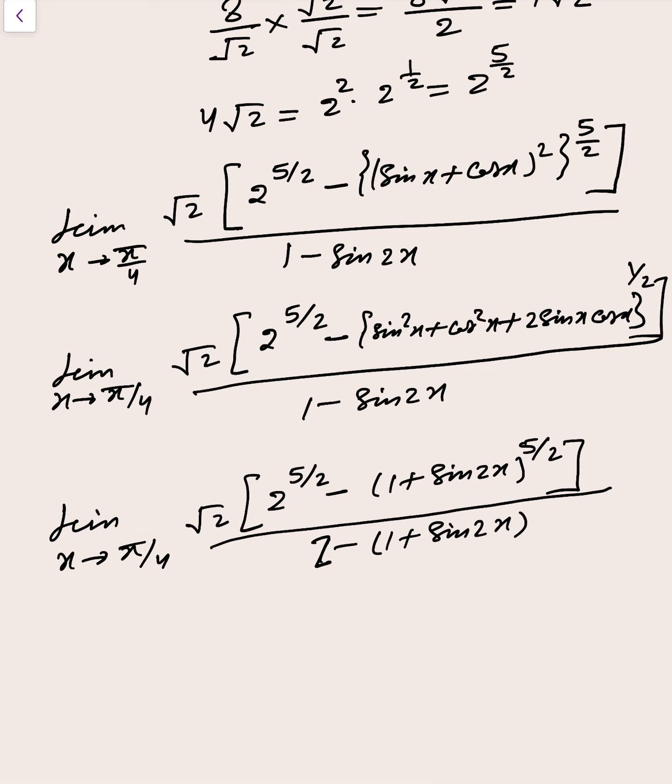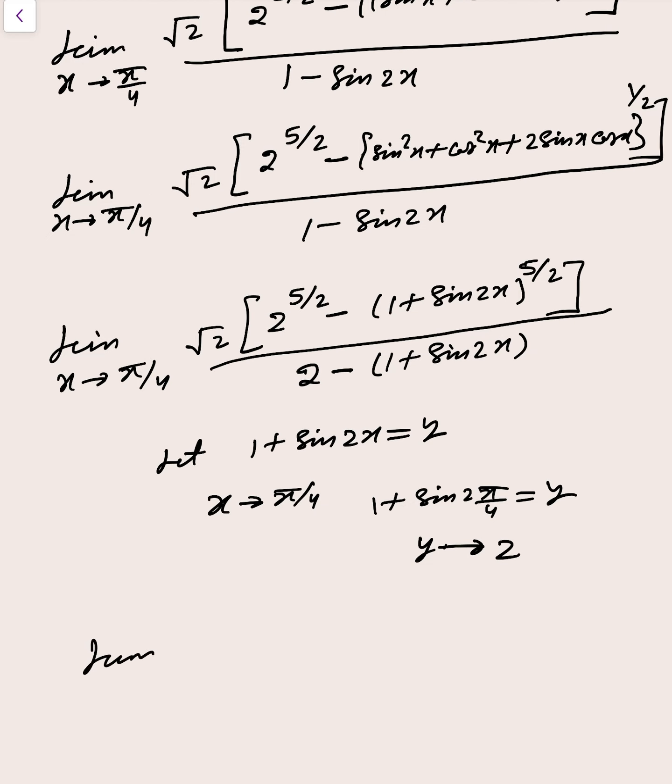Now if you see very carefully, let 1 plus sin 2x equal to y. Then if x tends to pi by 4, means that value put here: 1 plus sin 2 into pi by 4, that is y. So if x tends to pi by 4, then y tends to 2.